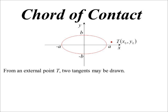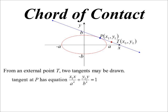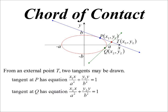A reminder of what the chord of contact is. All you know is the equation of the ellipse and some external point, which I've called x₀, y₀. From that external point it would be possible to draw in two tangents. We know the equation of the tangent: if I give P coordinates x₁, y₁, the tangent equation is x₁x/a² + y₁y/b² = 1. There would be a second tangent with contact point x₂, y₂, giving x₂x/a² + y₂y/b² = 1.